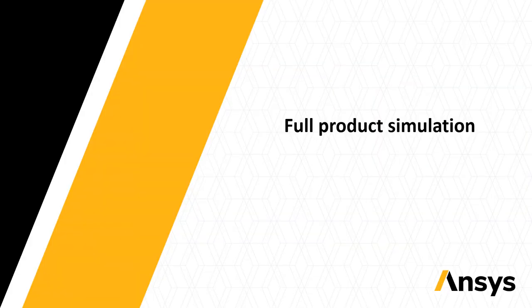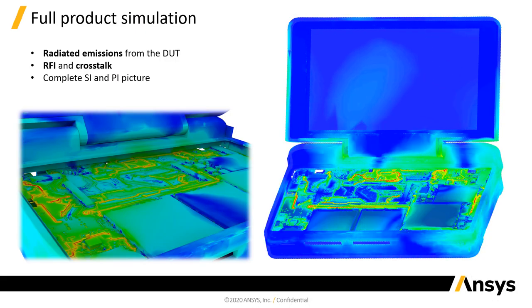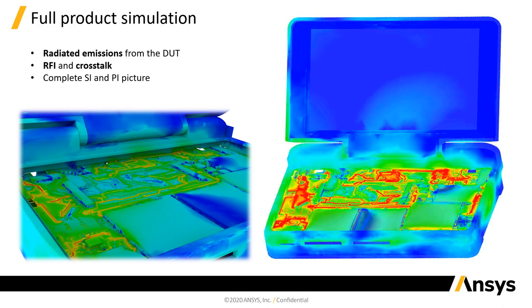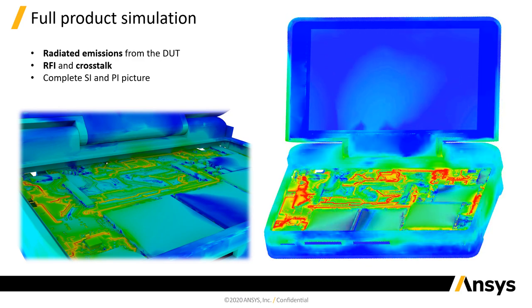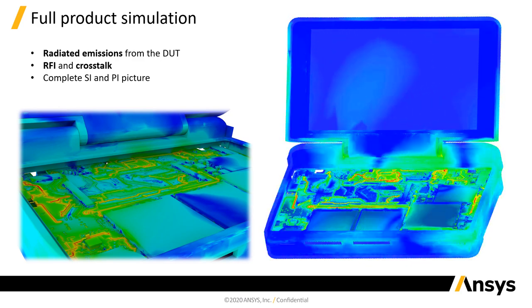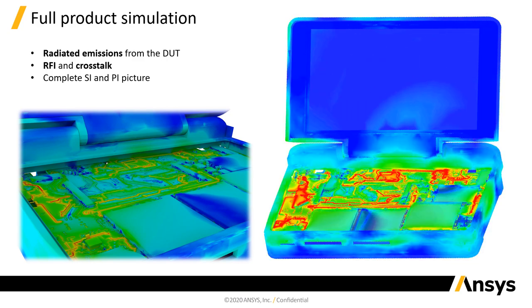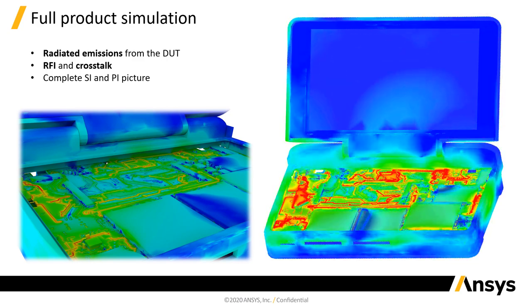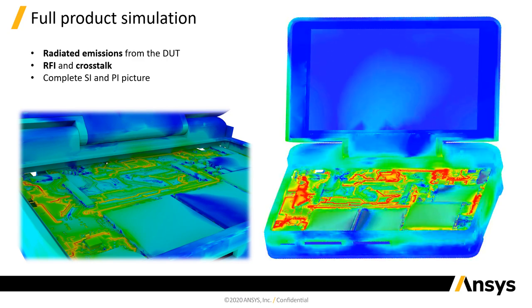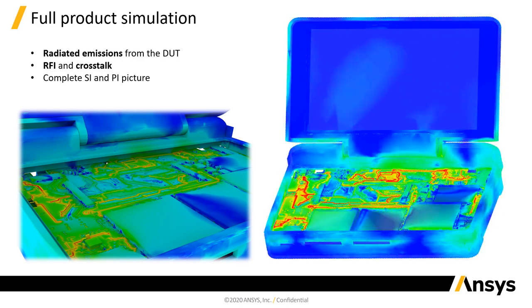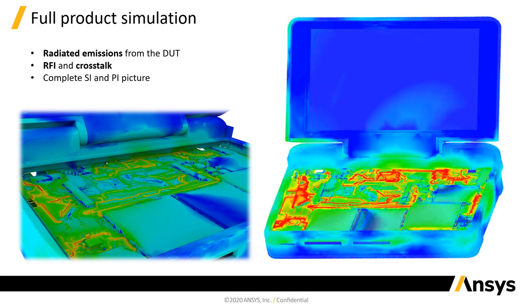We can end up with a design-of-experiment response surface where we change the capacitor C1 position on both Y and X axes and see the best values for capacitors C1 and C2 that will suppress the noise. Now, for the full product simulation — still using the laptop example — after optimizing vias and the design, we can simulate the whole product and see really good benefits. You can see radiated emissions from your device under test, perform RF/EMI simulations, and observe crosstalk between digital signals and antennas in your product.